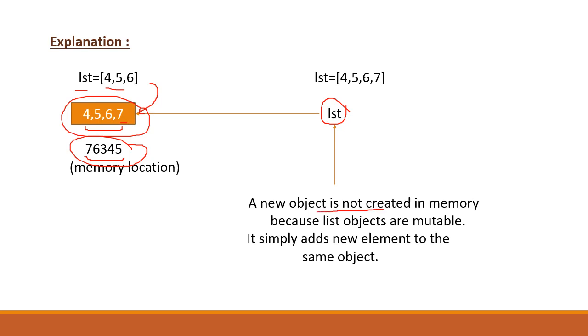So in this case, a new object is not created in memory because list objects are mutable. It simply adds a new element to the same object. The initial object which had 4, 5, 6 values now has 7 added to it, instead of creating a separate object like in the integer example where changing from 10 to 15 created a separate object.